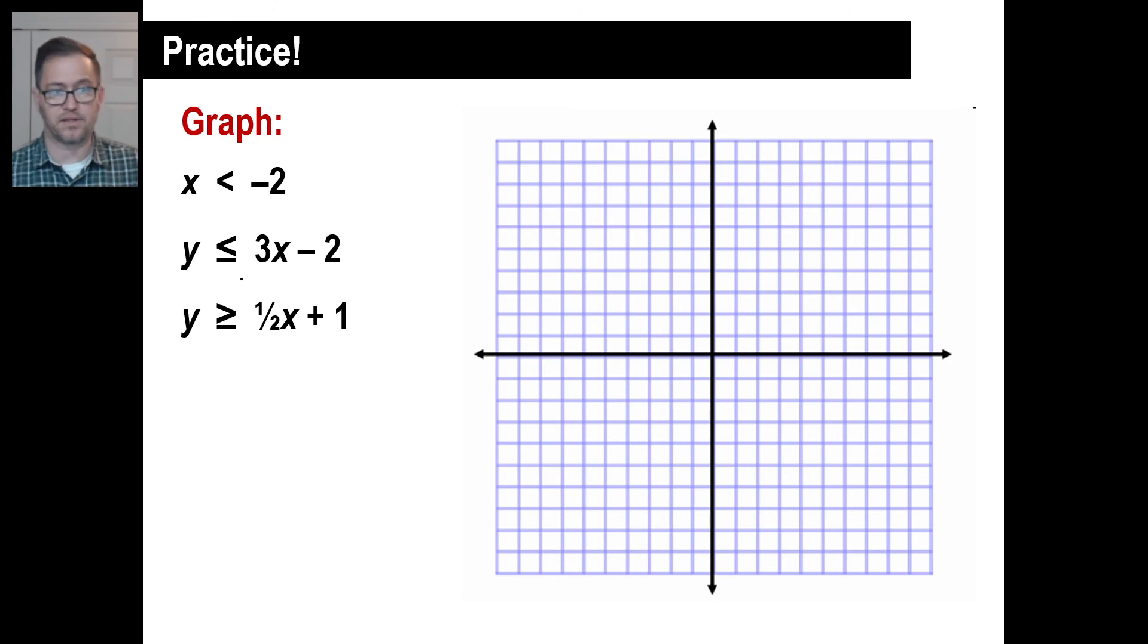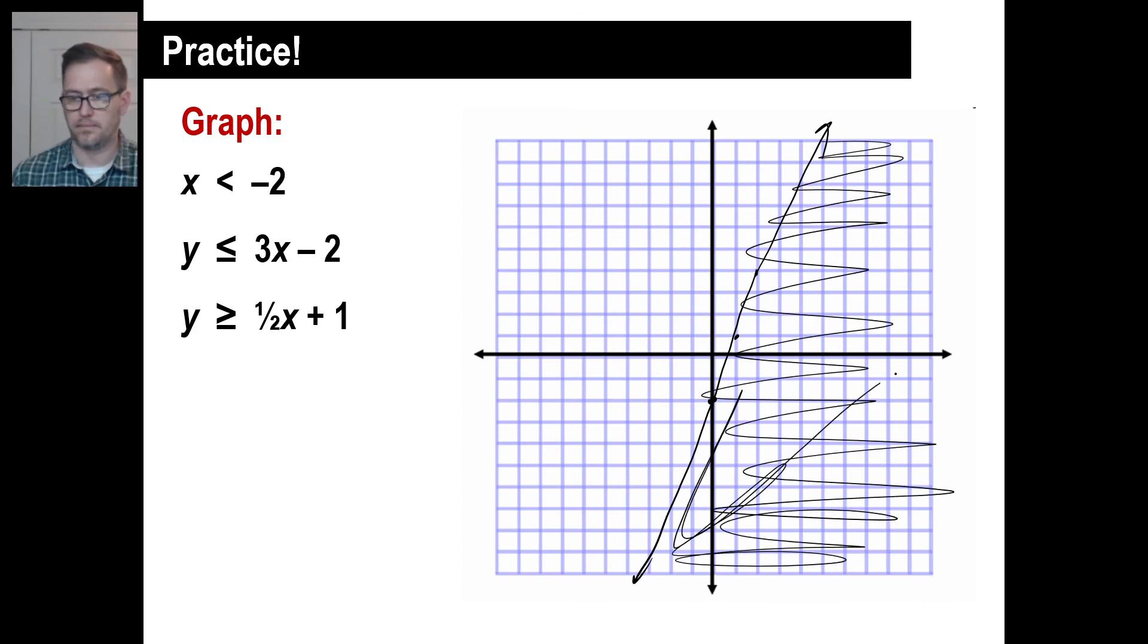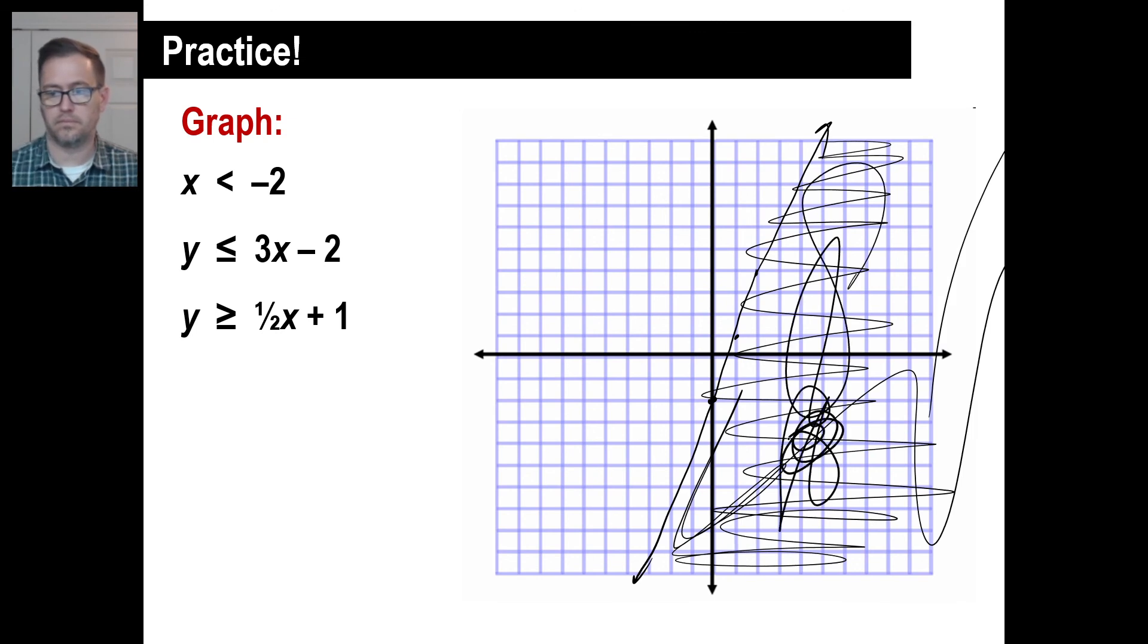Next one we have y is less than or equal to 3x minus 2. Babysitting situation: you're charged 2 bucks, you make 3 bucks a kid. It's a little better situation. That means the y intercept is at negative 2. Your slope is 3, so 3 over 1: 1, 2, 3 and over, 1, 2, 3 and 1 over, 1, 2, 3 and so on. You do have the equal sign, so it will equal the line. So you get to fill the line in. It's a solid line. And it's going to be less than or equal to that, so you'll have what's here on the bottom, underneath there. There you go. Fill it in. Pause it and try the last one.